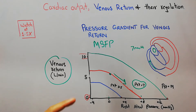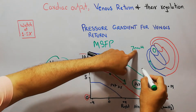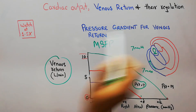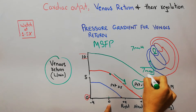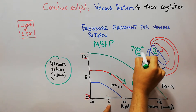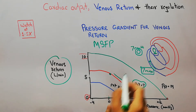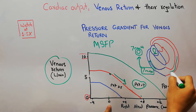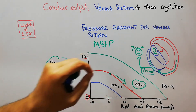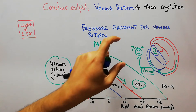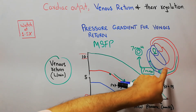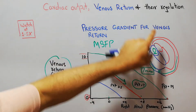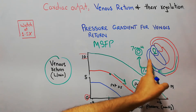As long as the mean systemic filling pressure is 7 mmHg and the right atrial pressure is 0 mmHg, there is a gradient which pushes blood from the periphery towards the heart. This difference in pressure between the right atrium and the mean systemic filling pressure is known as the pressure gradient for venous return, and due to this gradient the blood keeps on returning towards the heart.